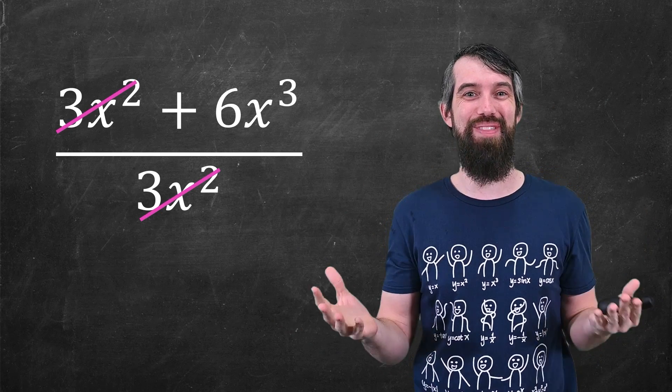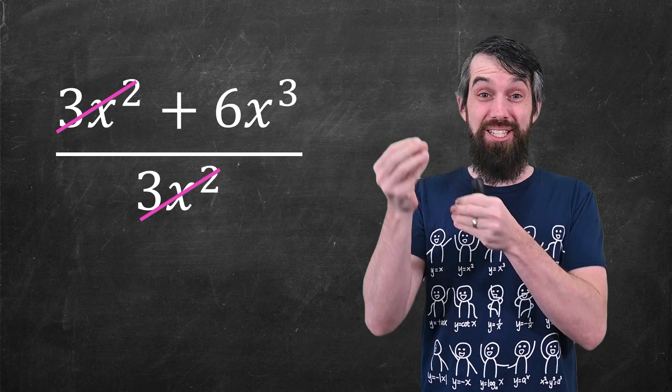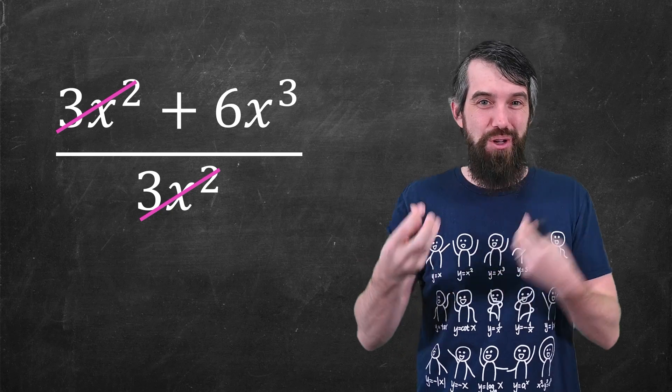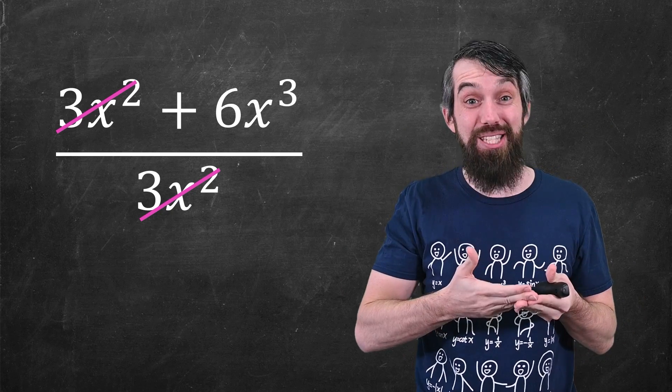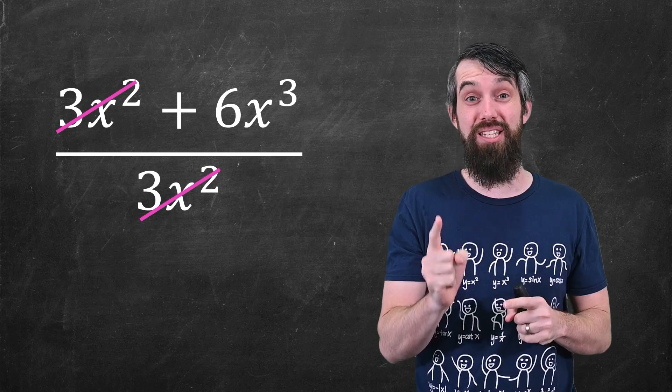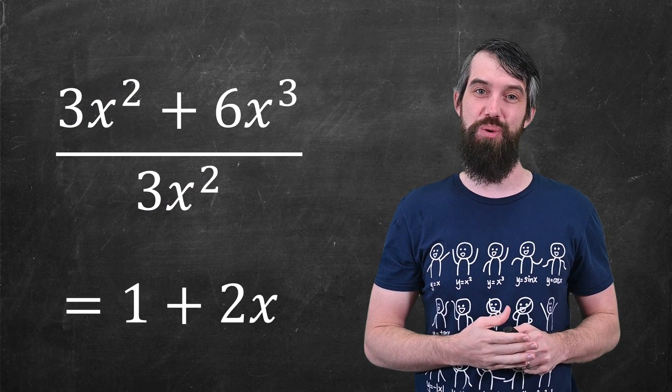But you can't do that. I mean, you can cancel the one 3x², but there's also a 6x³ in the numerator. And if you have a sum of things in the top, you've got to cancel both terms. So the 3x² can cancel to 1, but the 6x³? That cancels to 2x. Final answer to this one is 1 plus 2x.